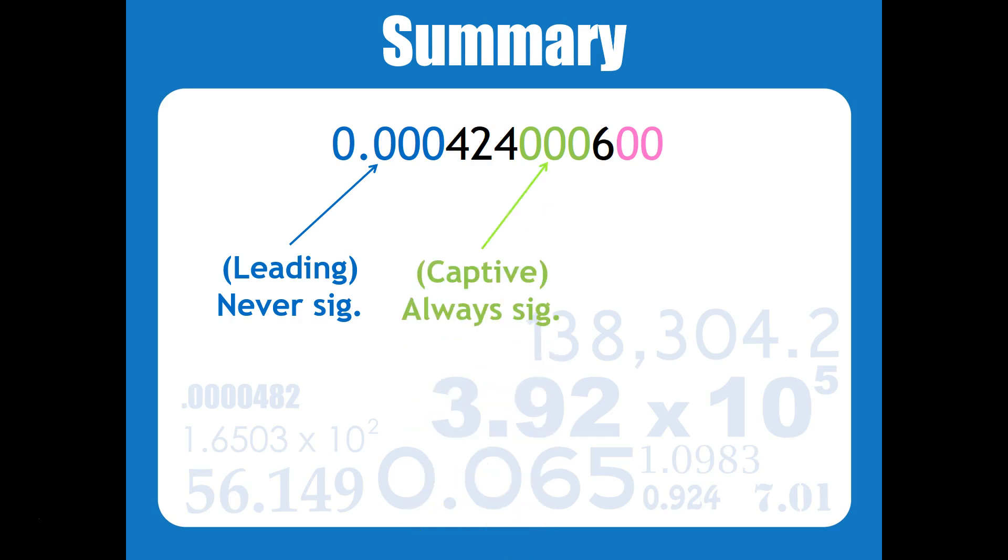The zeros in the middle, in between two nonzero numbers, are captive zeros, and they are always significant. And then zeros at the end are called trailing zeros, and they are sometimes significant. If there's a decimal point, then they are considered significant.